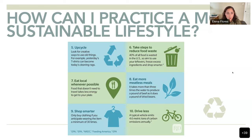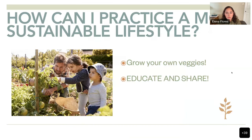Number seven: eat local whenever possible — not just going to local restaurants, but cooking your own food at home. Eight: eat more meatless meals and follow a more plant-based diet. Number nine: shop smarter. Number ten: drive less or carpool whenever possible. Also, growing your own vegetables has a huge impact on a sustainable lifestyle.